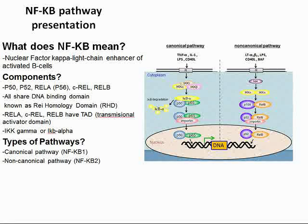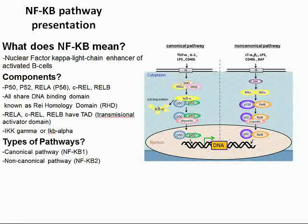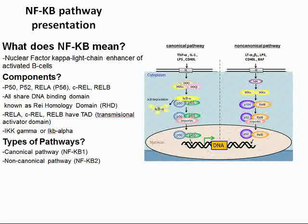What kind of components does this thing have? NFKB in mammals consists of a main body of five transcriptional factors: P50, P52, REL-A (also known as P65), C-REL, and REL-B. All five share a 300 amino acid N-terminal DNA binding domain, also known as the REL homology domain, or RHD.